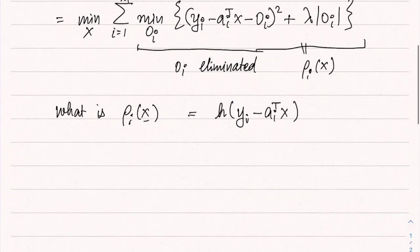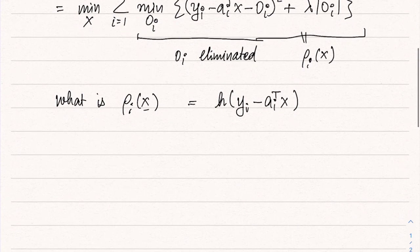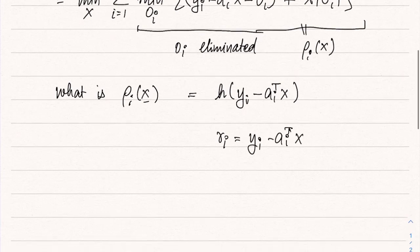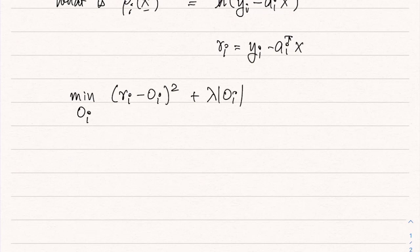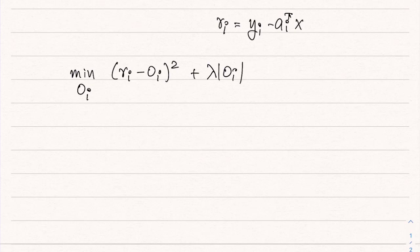Let us see how to solve this problem. So we are essentially now solving this problem. Let us say that r_i is equal to y_i minus a_i transpose X. So we are interested in solving this problem: minimize over O_i the quantity (r_i minus O_i) squared plus lambda times absolute value of O_i. Now do we know how to solve this problem? This problem is not very difficult to solve. All we need to do is divide O into several cases and then we should be able to solve them.